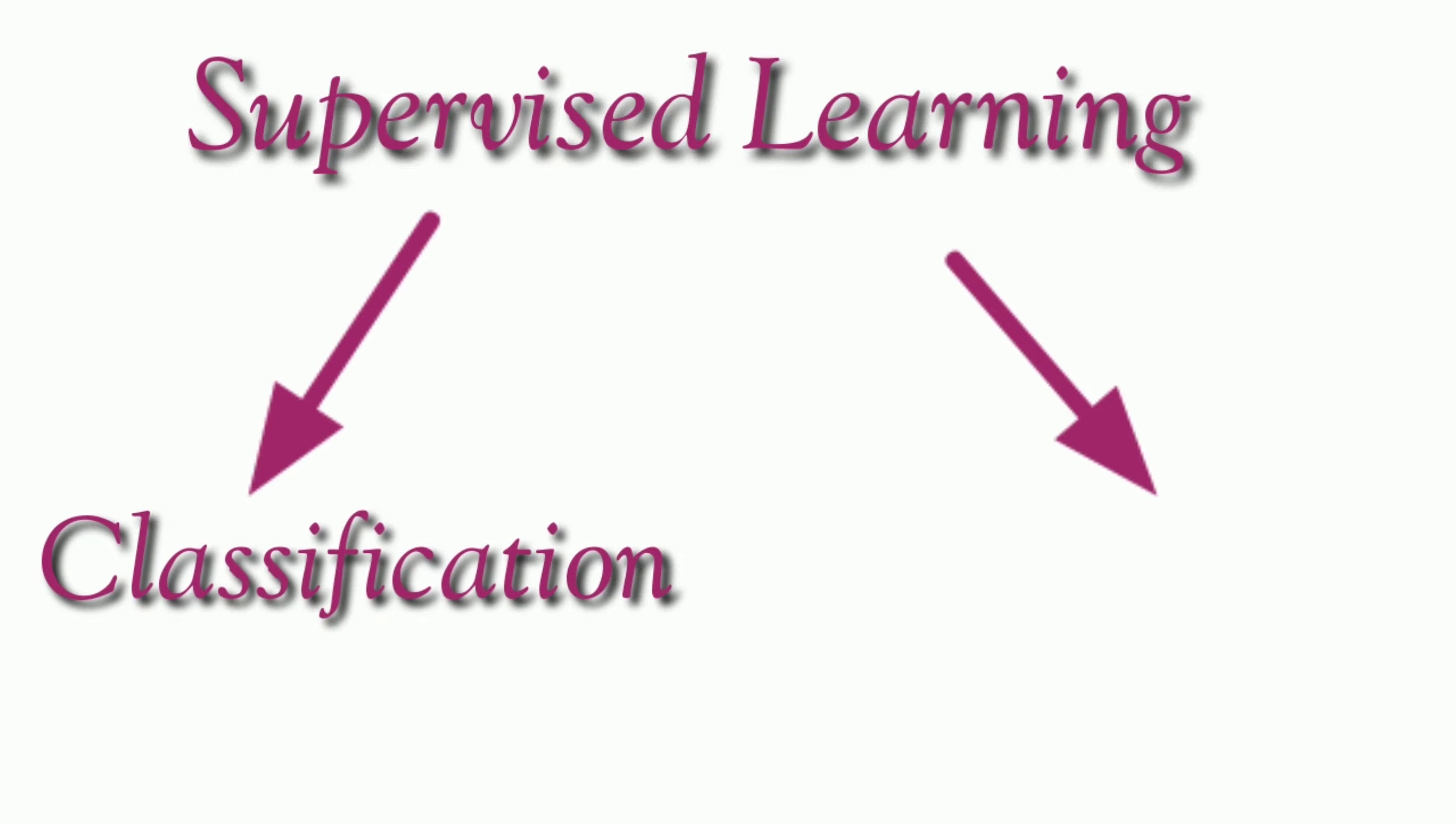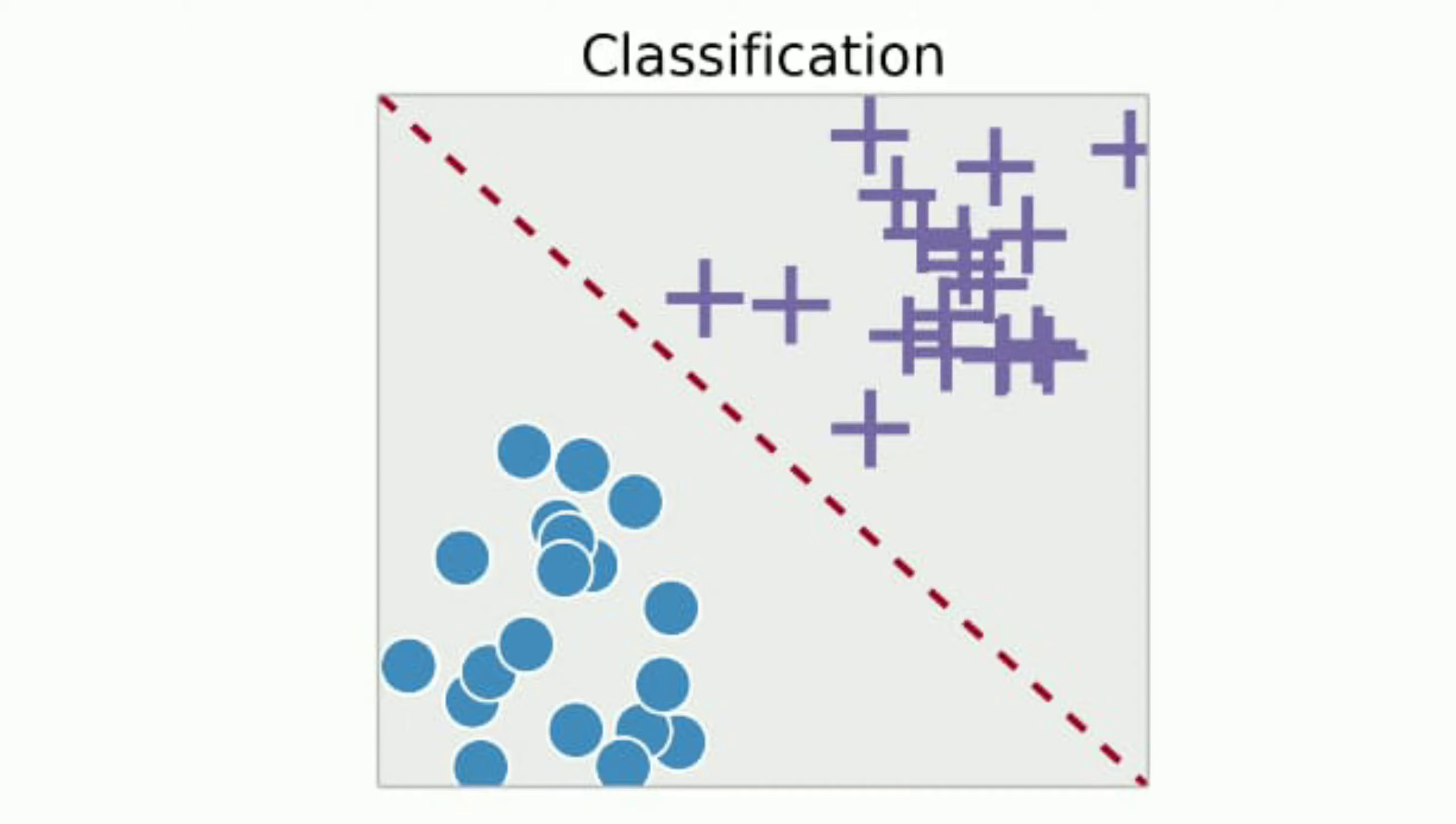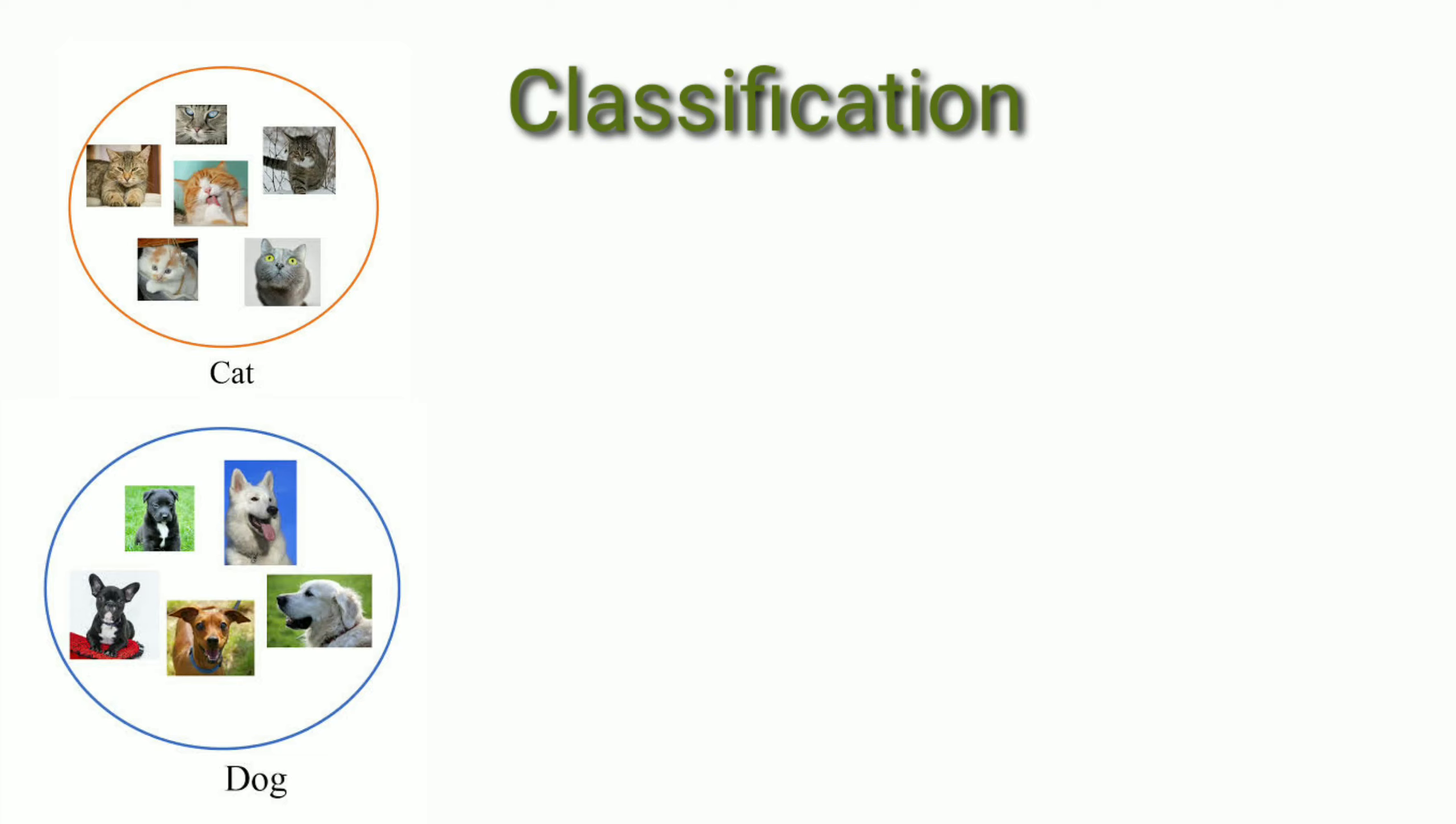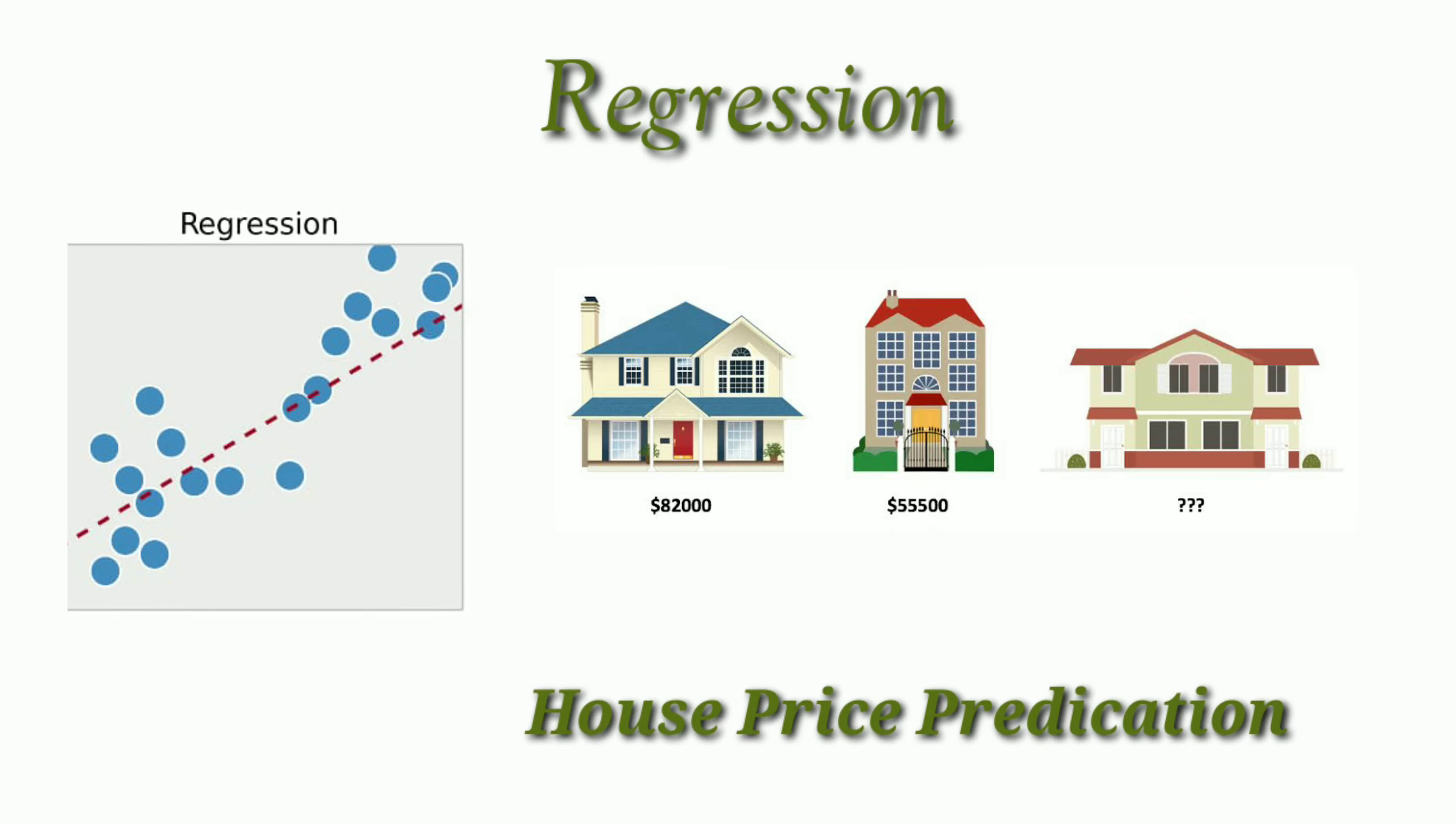Supervised learning is further subdivided into two parts: classification and regression. Classification means it will have two classes or more than that, such as one class is of cat and another class is of dog. A machine has to find which image is of dog or cat. Regression will give a single output such as house price prediction.